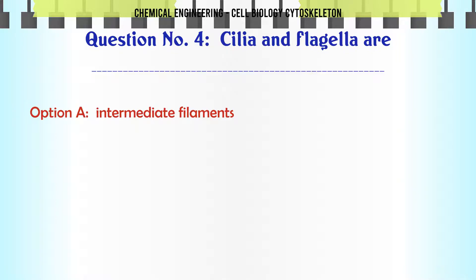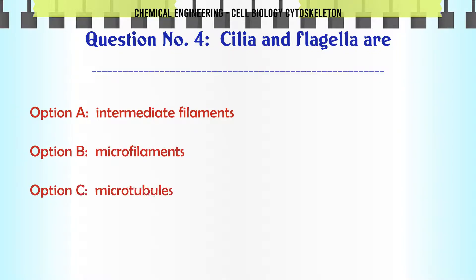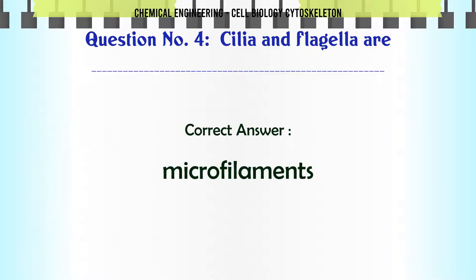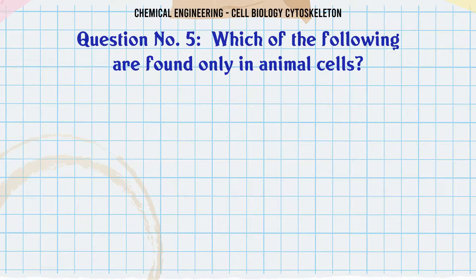Cilia and flagella are: A. Intermediate filaments, B. Microfilaments, C. Microtubules, D. Phospholipids. The correct answer is Microfilaments.